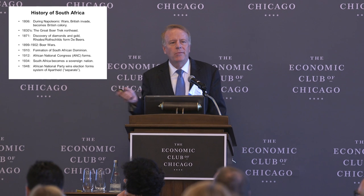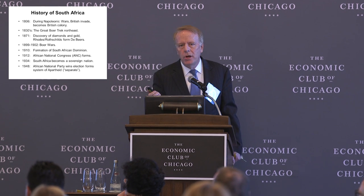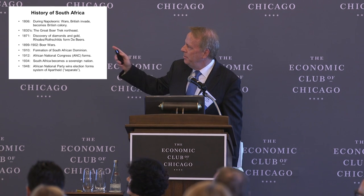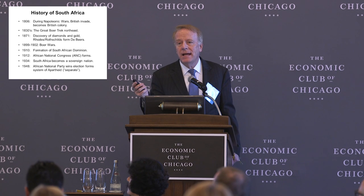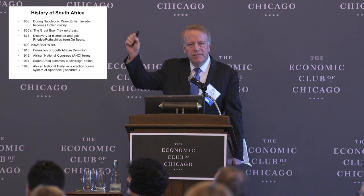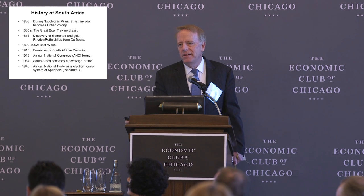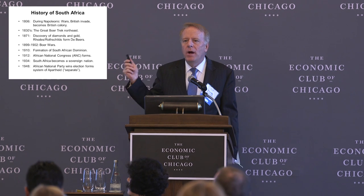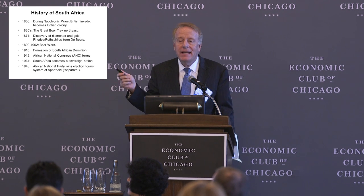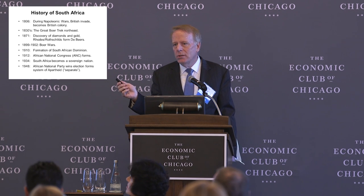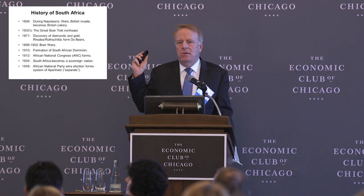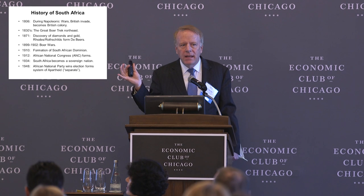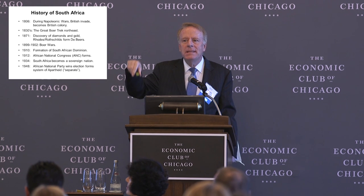Everything changed in 1871 when Cecil John Rhodes — of the Rhodes Scholarship and Rhodesia — built De Beers, because the Eureka diamond had been discovered in the middle of South Africa. About a year and a half after that, they found gold. At one point in the late 19th century, 95% of the diamonds in the world came from South Africa. This made it extremely valuable real estate, and created massive demand for hard labor down in the mines.